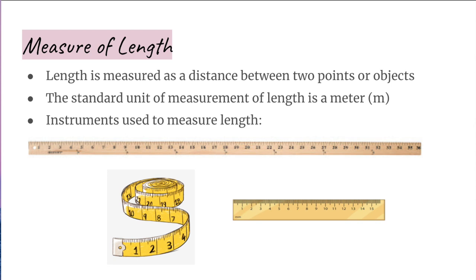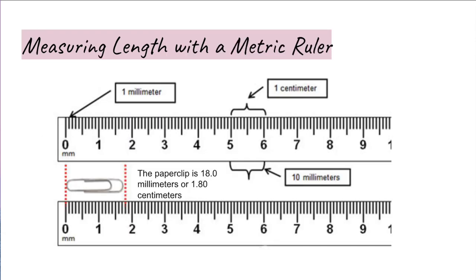The type of instrument depends on the type of work and the accuracy needed. For example, a stiff meter stick would be used by carpenters and masons, a flexible measuring tape would be used by tailors, and a ruler for geometry work. In science class, most measurements are much smaller than a meter, so a metric ruler is the standard instrument for measurement in the lab.